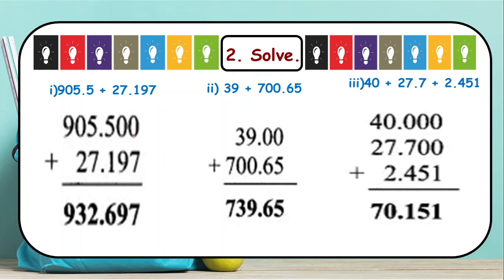We have placed the decimal exactly below each other. When you go on adding: 0 plus 7 is 7, 0 plus 9 is 9, 5 plus 1 is 6, then pull the decimal down, 5 plus 7 gives 12 — write 2 and carry 1, 1 plus 2 is 3, and 9. So the key care is that the decimal must come exactly one below the other.